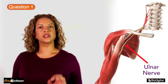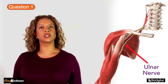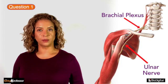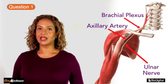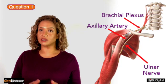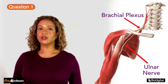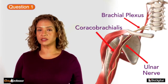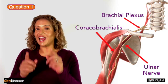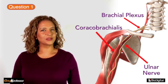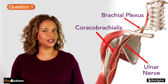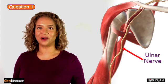Question 1. The ulnar nerve is one of the terminal branches of the medial cord of the brachial plexus. It arises medial to the axillary artery and continues medial to the brachial artery, lying on top of the coracobrachialis muscle in the anterior compartment of the arm. It then passes posteriorly through the medial intermuscular septum into the posterior compartment.